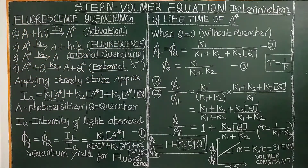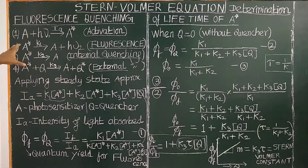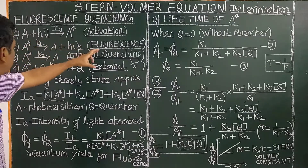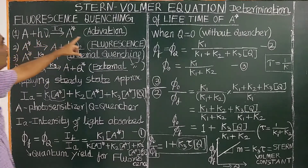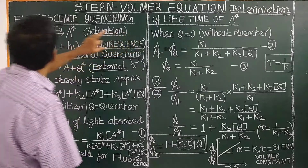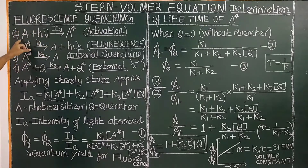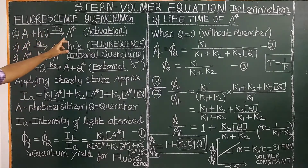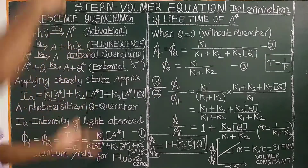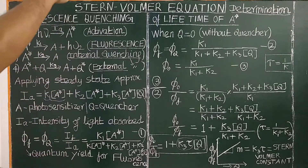Let us see what is fluorescence quenching — quenching of fluorescence. It involves four steps. The first step is called the activation process. When a photon of energy hν falls on the molecule (the photosensitizer), it absorbs the energy and goes to the excited state.